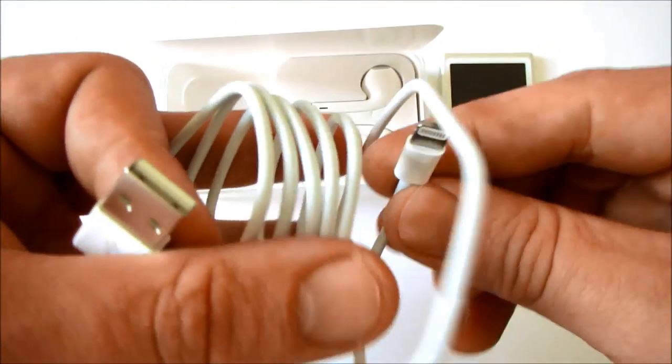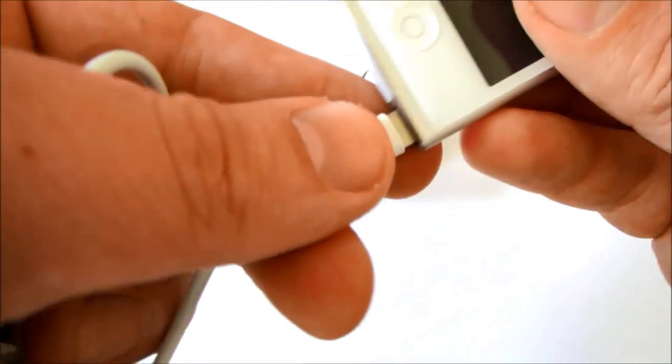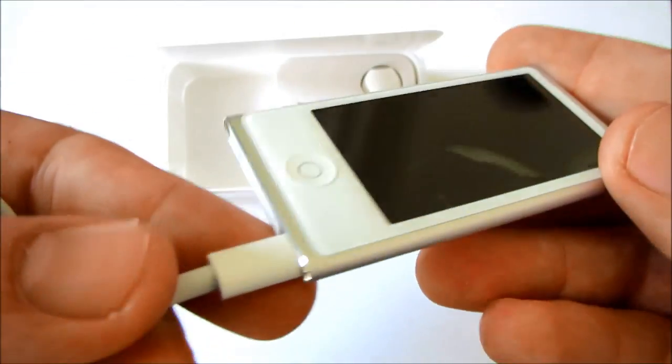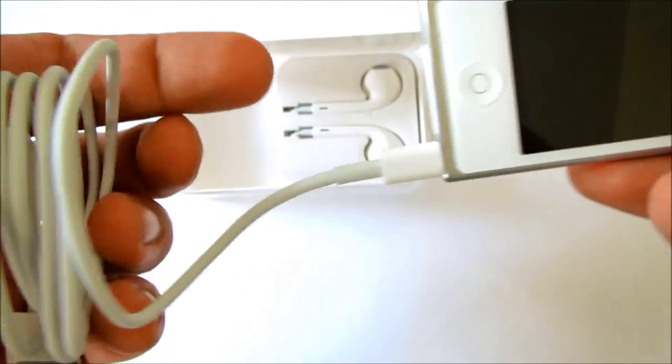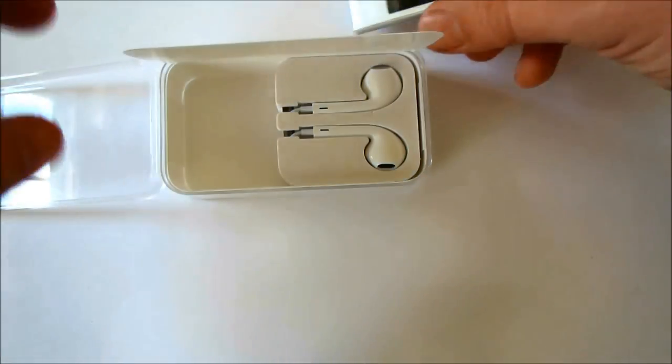Making iPod Nano thinner required a bold move. Replacing the 30 pin dock connector with something newer, smaller and better. It's called lightning, and it's significantly more durable than the 30 pin connector. It's also reversible, so there's no wrong way to plug in the cable.